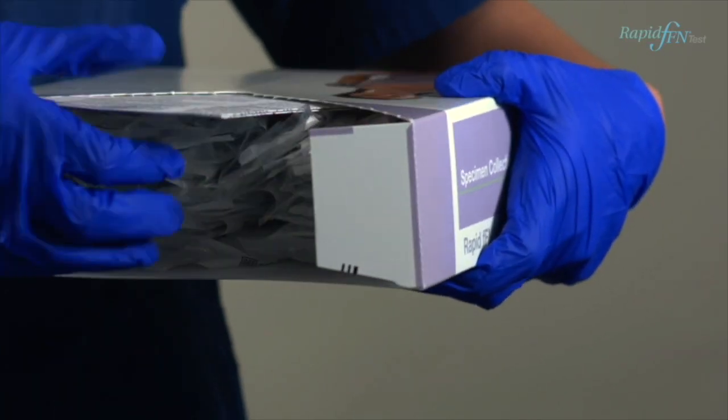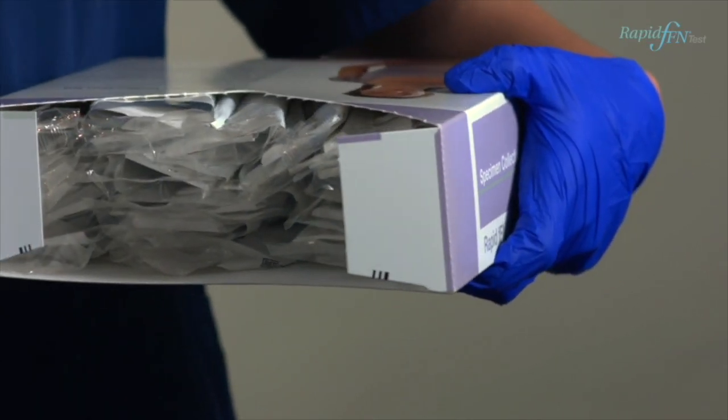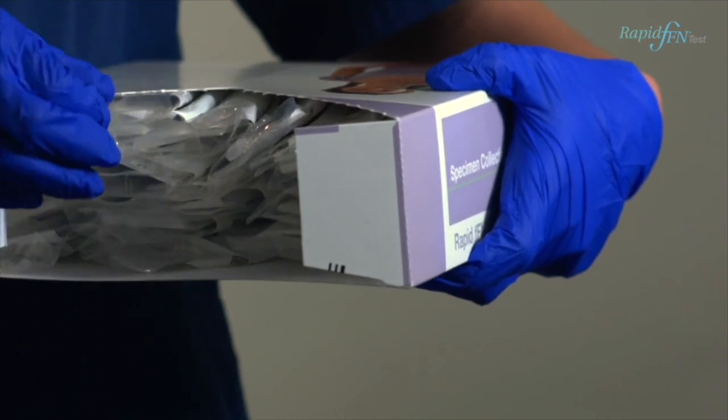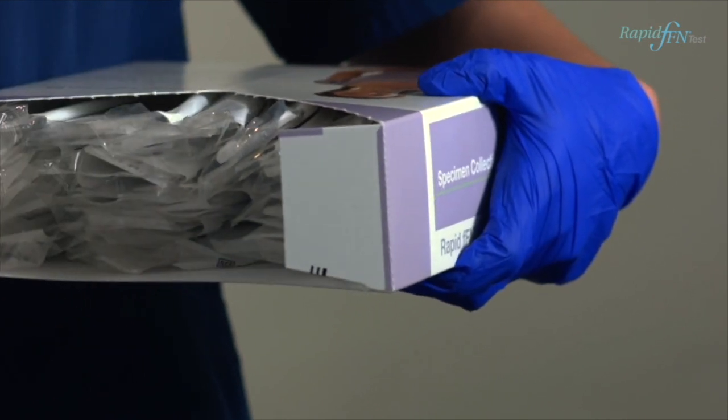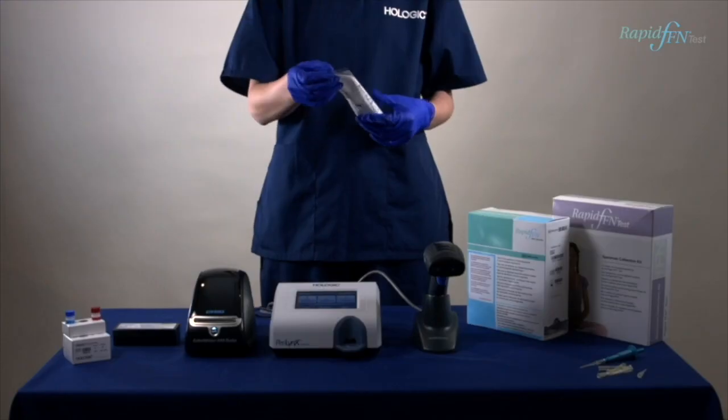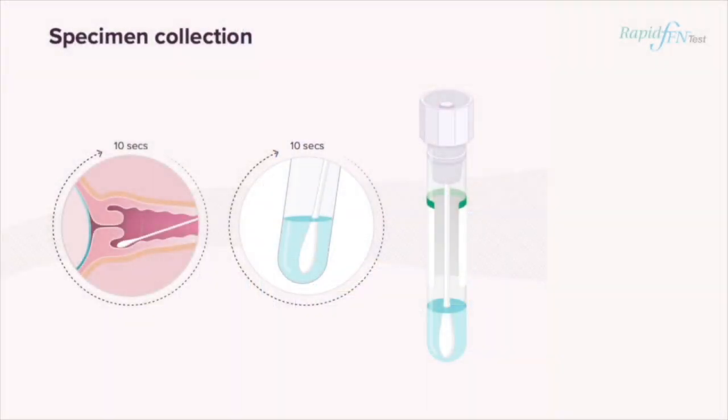Ensure you only use the specimen collection kit provided by Hologic for the purpose of a fetal fibronectin test. During speculum examination, lightly rotate the swab across the posterior fornix of the vagina for 10 seconds to absorb cervicovaginal secretions.